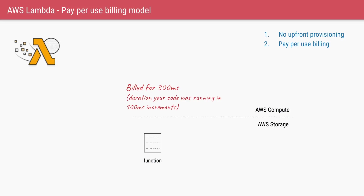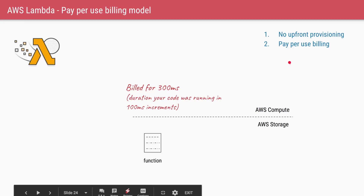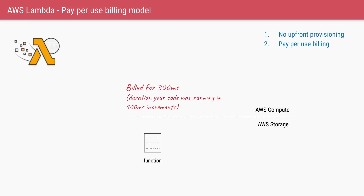We now understand two features of function-as-a-service, or AWS Lambda. The first is no upfront provisioning — you are not specifying in advance how many instances of your function you want. The second is a pay-for-use billing model — you pay only for the number of milliseconds your function is actually running.